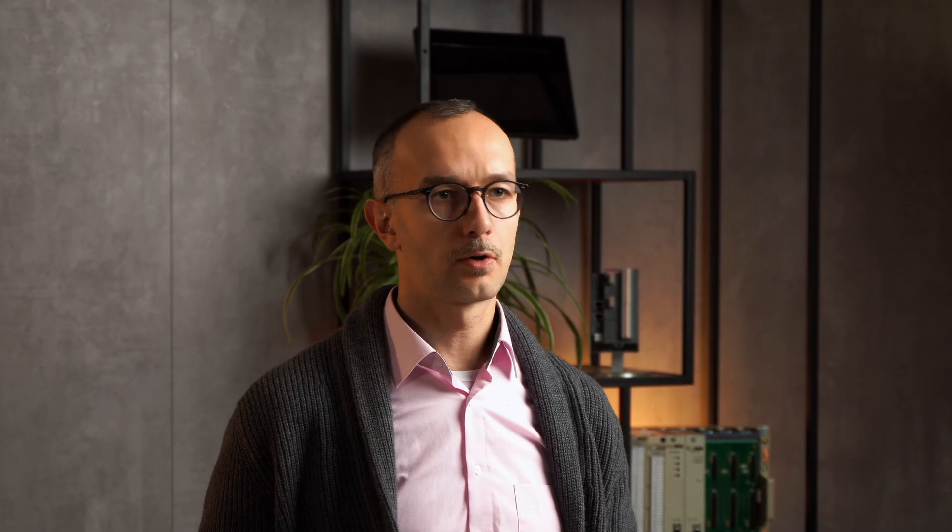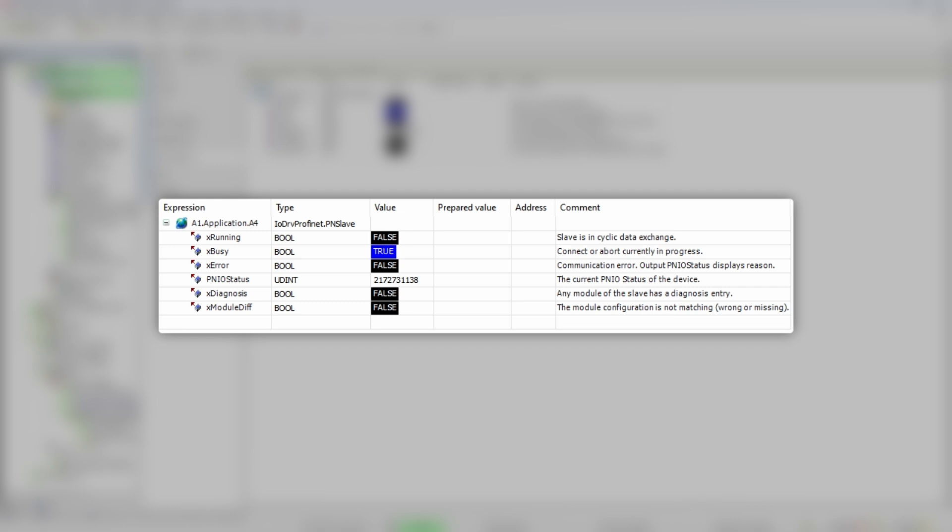In PNIO IEC Objects tab, there is a structure which has the same name as the ProfinetIO device, A4. The structure has a child boolean variable x running, which does exactly what the name suggests. It turns true when communication is running. Now we just need to take that flag into account in the part of the program where we handle analog I/O scaling.